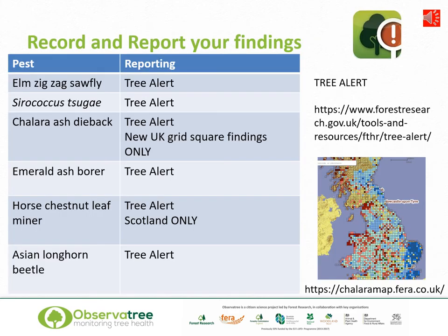If you think you've found one of these Observatory priority pests and pathogens, it's really important you record the information and report your findings via the TreeAlert website run by Forest Research. For elm zigzag sawfly, Syracoccus sugei, emerald ash borer and Asian longhorn beetle we are interested in all findings. For Chalara ash dieback we are only interested in new UK grid square findings, and the map on the website will help you identify if these are new to the UK. For horse chestnut leaf miner, as it is already widespread in England and Wales, we're only interested in TreeAlert reports from Scotland.